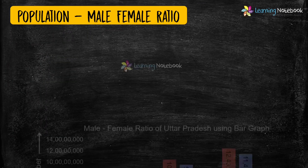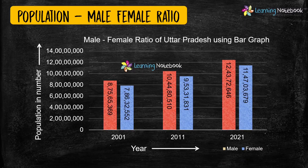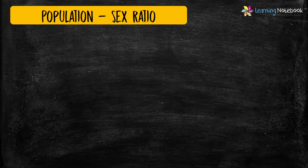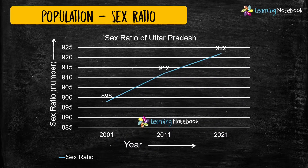Double bar graphs can be used to show the male and female ratio of the population of Uttar Pradesh. Then you can take help of a line chart to show the sex ratio of the population of Uttar Pradesh as shown here.